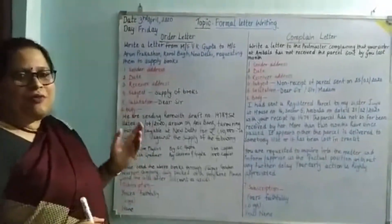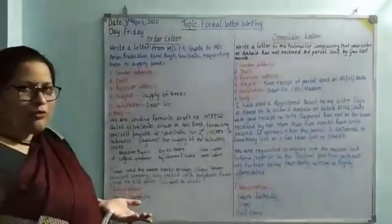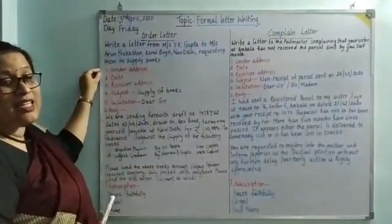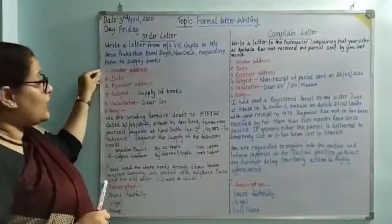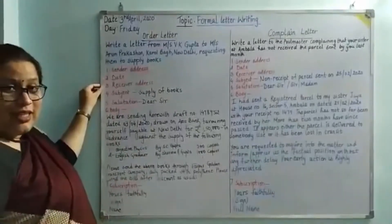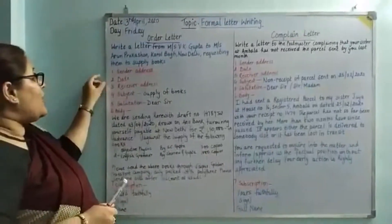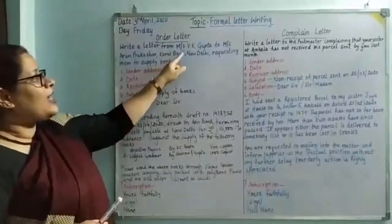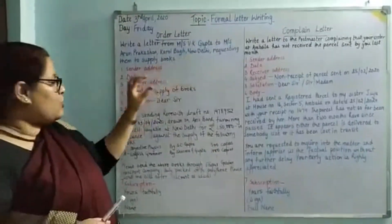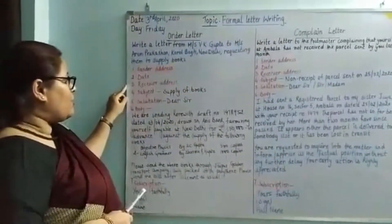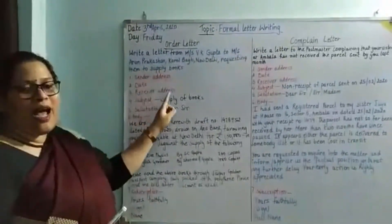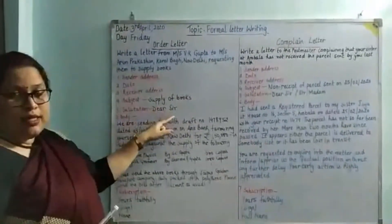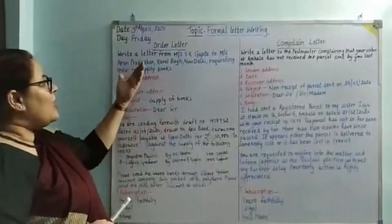In block format, everything comes to the right. First will be the sender address — that is your address — then the date, then the receiver's address. Here it is Mr. Arun Prakash in Karol Bagh, New Delhi, so it will come in the receiver address. The subject will be 'Supply of Books.' The salutation will be 'Dear Sir' because Mr. Arun Prakash is a male.